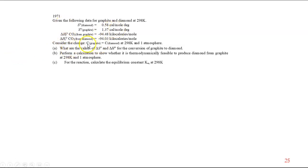Consider the change of carbon going from graphite to diamond, which is something you can do with the help of a diamond anvil press. And what are the values for the change in entropy and the change in enthalpy for the conversion of graphite to diamond?